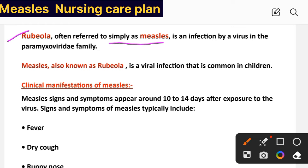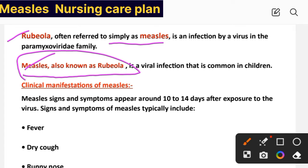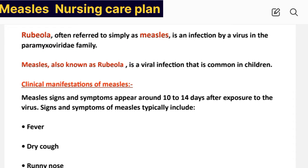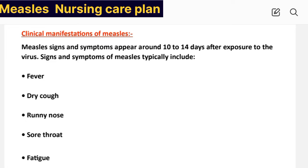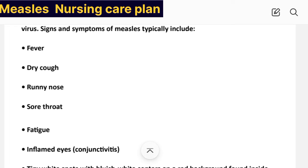Rubiola, often referred to as measles, is an infection caused by a virus in the paramyxoviridae family. It is a viral infection that is common in children. Signs and symptoms of measles appear around 10 to 14 days after exposure to the virus. They typically include fever and cough.